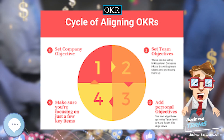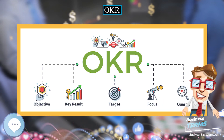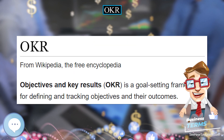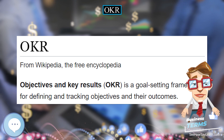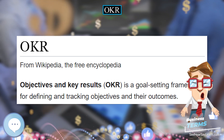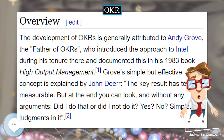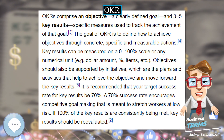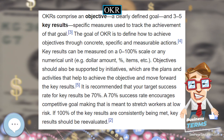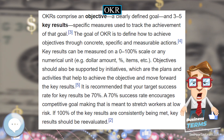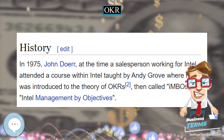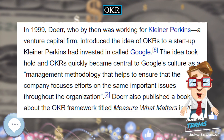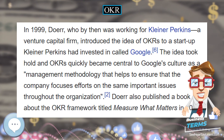In 1999, Doerr, who by then was working for Kleiner Perkins, a venture capital firm, introduced the idea of OKRs to a startup Kleiner Perkins had invested in called Google. The idea took hold and OKRs quickly became central to Google's culture as a management methodology that helps to ensure that the company focuses efforts on the same important issues throughout the organization. Doerr also published a book about the OKR framework titled Measure What Matters in 2017.